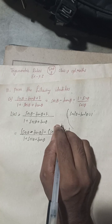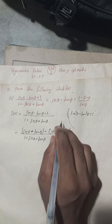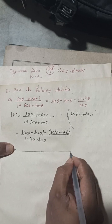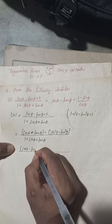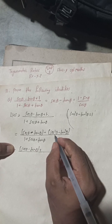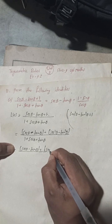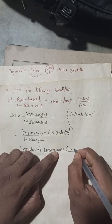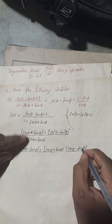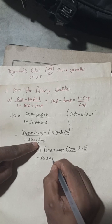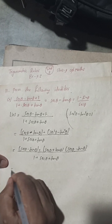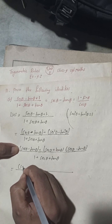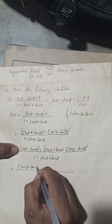Now we have sec θ − tan θ, plus sec²θ − tan²θ. Since this is a difference of squares (a² − b²), it can be written as (sec θ + tan θ)(sec θ − tan θ). The denominator remains 1 + sec θ + tan θ. Now take sec θ − tan θ as common from the numerator.